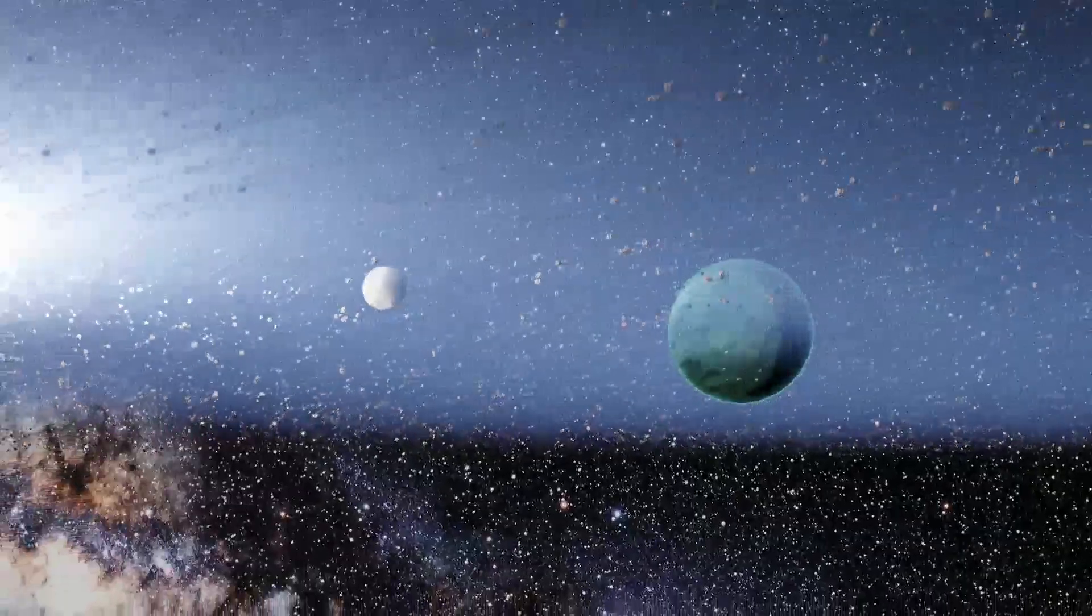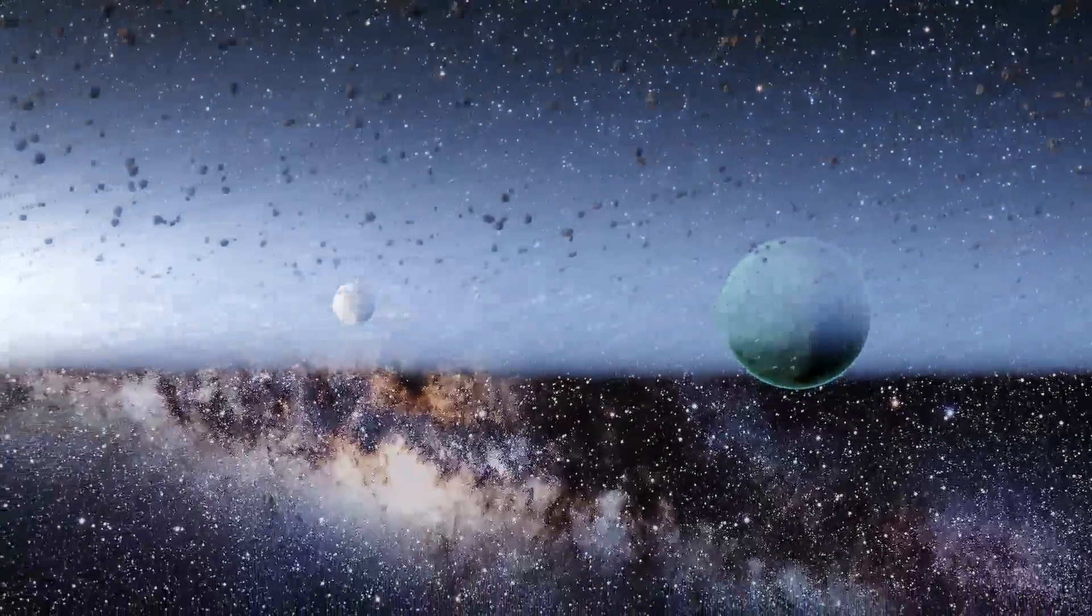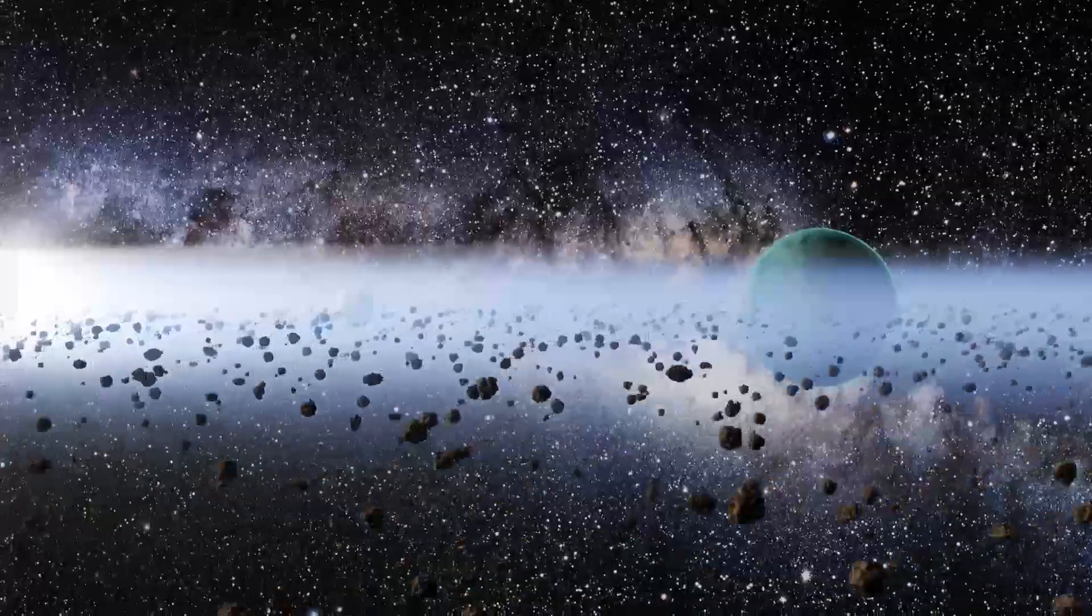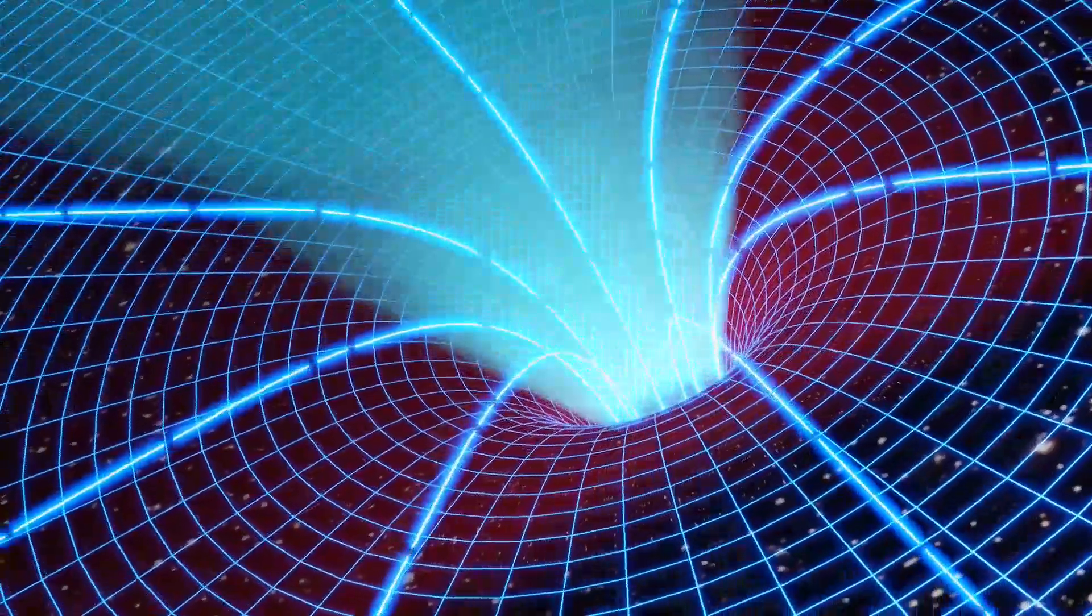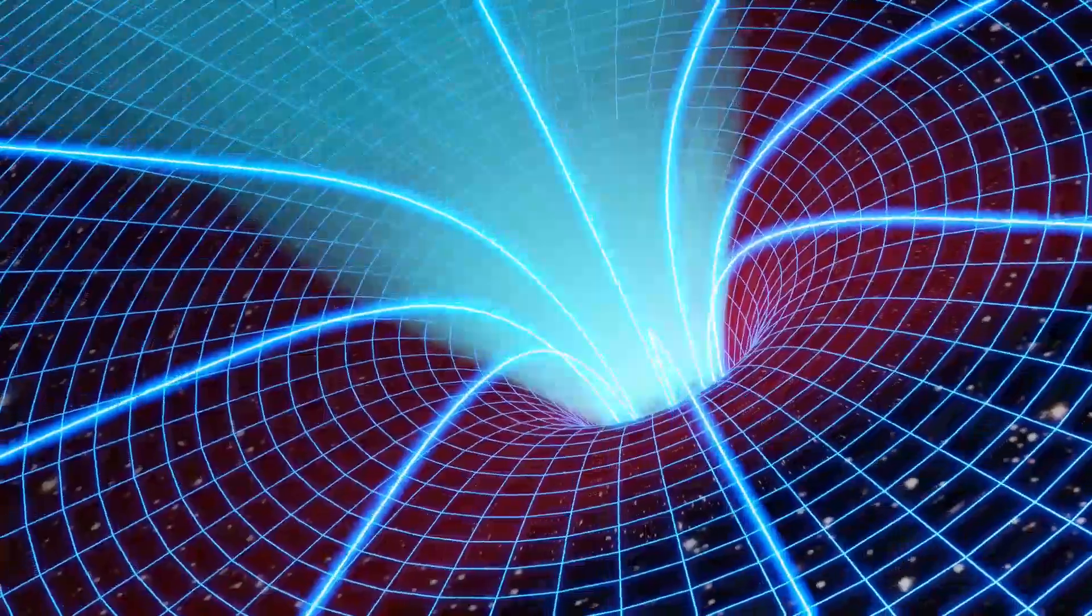In the same way, if an asteroid or comet comes near the sun, then it gets pulled towards it. We called it gravity. If we consider the trampoline as a space-time fabric, then we can see that the time is also bending.